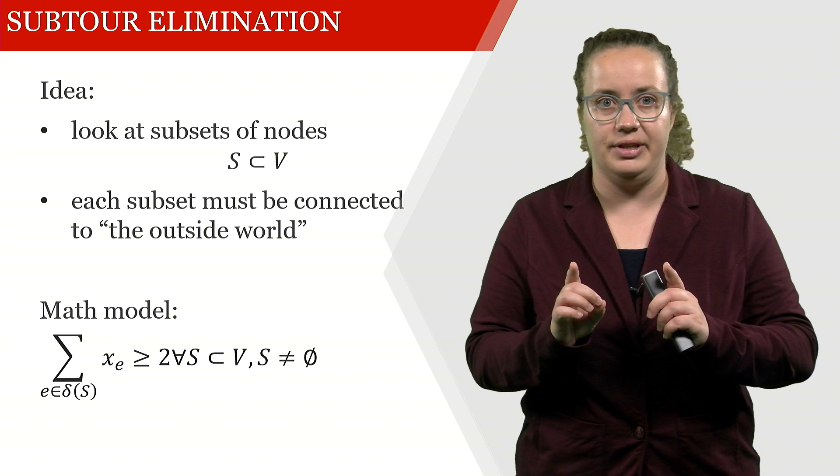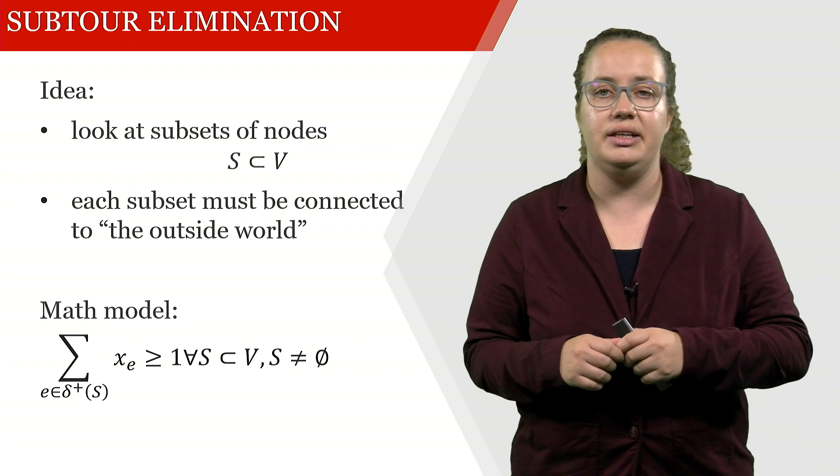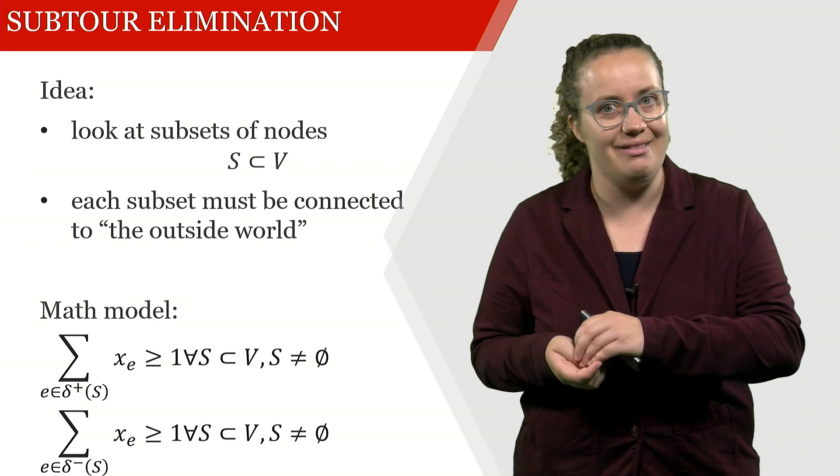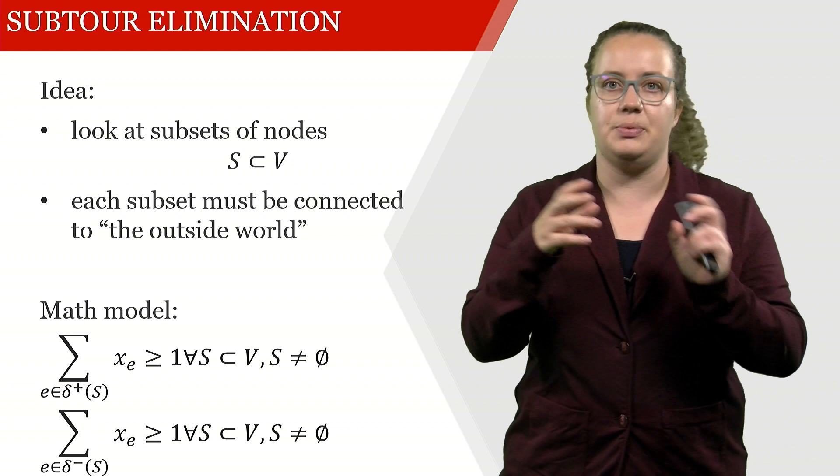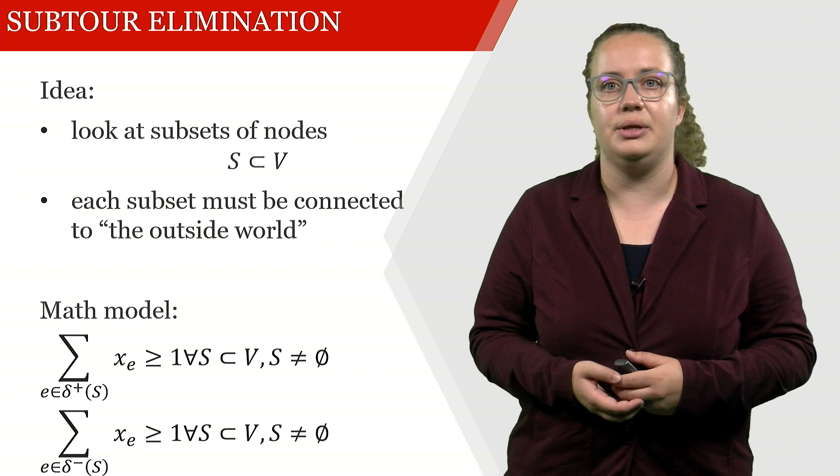Alternatively, we can also say that the number of arcs that go out has to be at least 1, or we can also say that the number of arcs that go in to this set has to be at least 1. All of these three formulations achieve exactly the same thing, they're just minimal differences that sometimes work better and sometimes work worse. So let's look exemplarily for one of them into how they actually work.